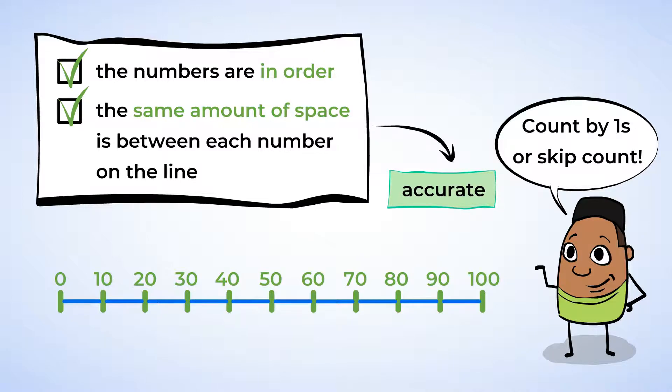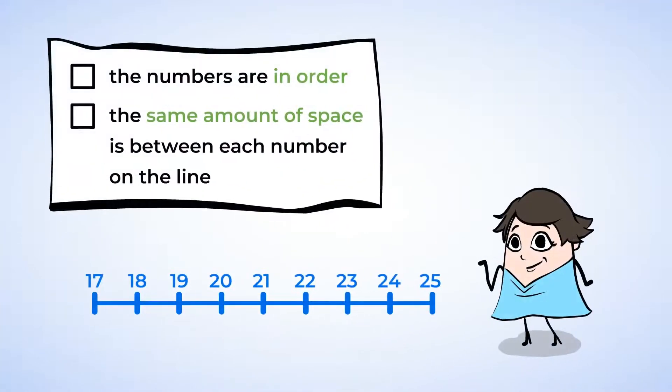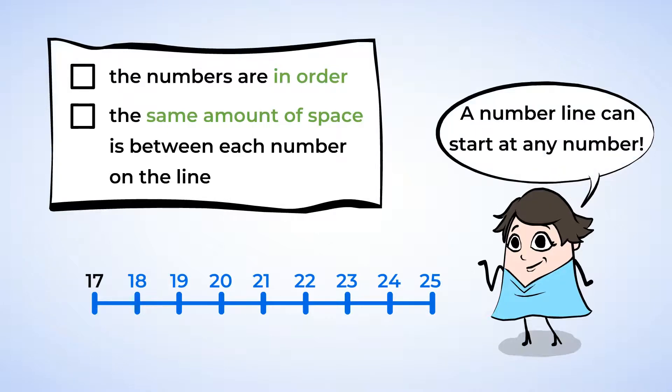And here is the blue number line. Okay, this one looks pretty different already. It doesn't start at 0, but that's okay. A number line can start at any number as long as it follows the two rules: it has to be in order, and it has to have even spaces. So let's check. The numbers count by 1s from 17 to 25, and the space between each mark is the same. So this number line checks out.